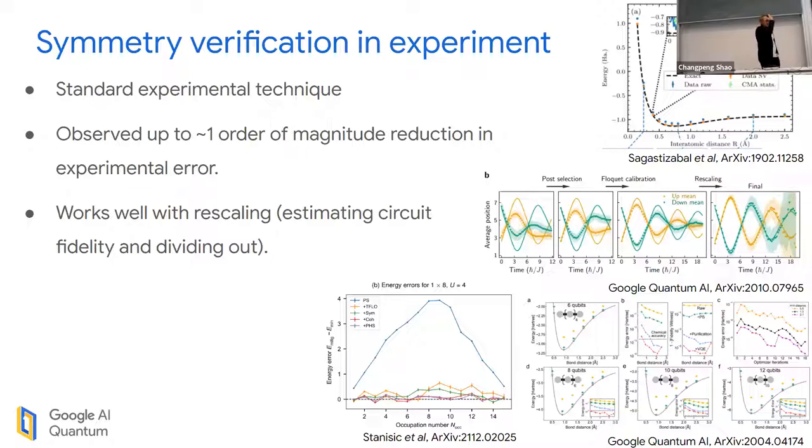When we ran this in theory, we were predicting about an order of magnitude improvement in error. This has mostly been matched in experiment. People have figured out that you don't just need to do post-selection on symmetries, you should also try to rescale to cancel out some of the completely incoherent depolarizing noise, and this error mitigation technique plays really well with that.